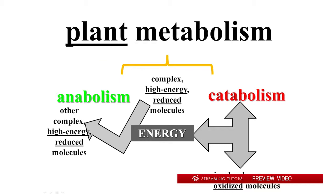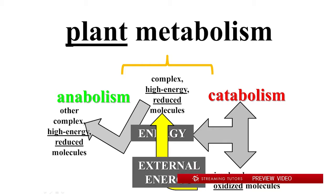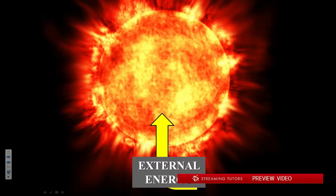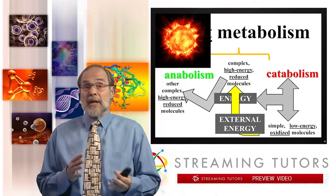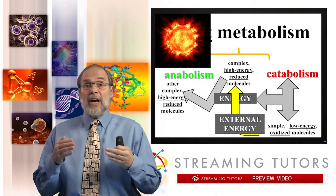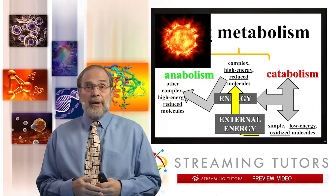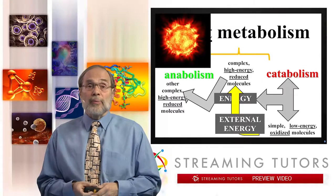Plant metabolism does all of these things too, but it does one thing that animal metabolism does not — it uses external energy to take simple, low-energy oxidized molecules and reduce them back to create high-energy reduced molecules. The source of that energy is the sun. Plants capture high-energy photons from the sun and use the energy stored in those solar photons to create high-energy chemical bonds, which make up the body of the plant. Animals then turn around and eat the plants, consuming that ultimately solar energy. In fact, all of the energy coursing through our bodies over our lives is ultimately derived from the solar photons that bombard the earth.